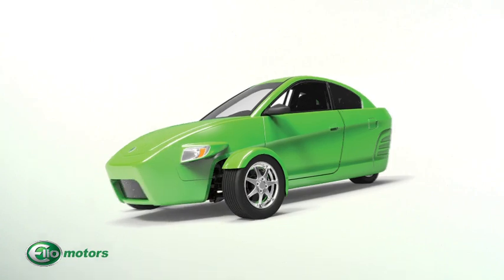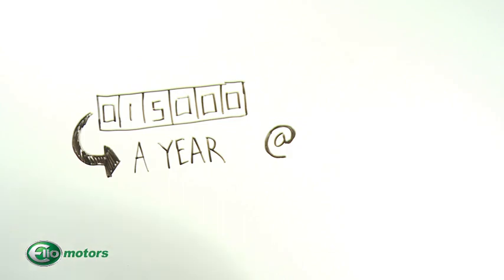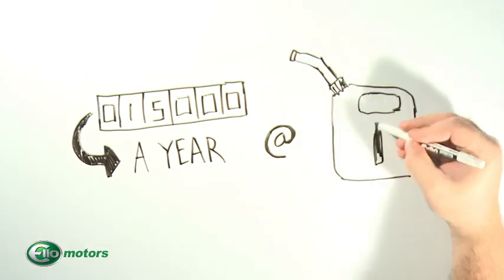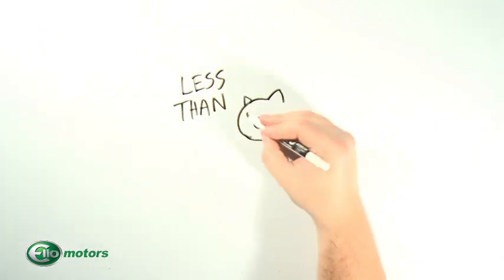To travel 15,000 miles a year, pretty common distance for most of us to drive in a given year, at $4 per gallon for gasoline, the Elio would use 187.5 gallons of gas for a total yearly cost of less than $800.